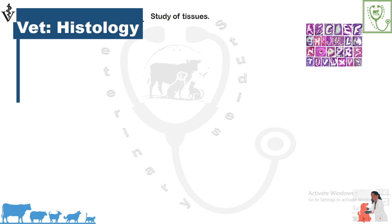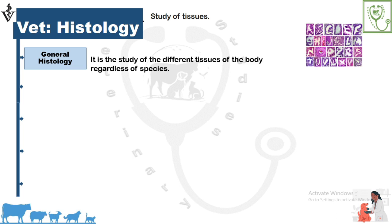Veterinary histology is the scientific study of the microscopic tissues of an animal body. Veterinary histology includes general histology, in which we study about the different tissues of an animal body regardless of species. Although there are many species in animal sciences with the same systems and organs, in general histology we do not compare anything between species. We study the normal microscopic structures of different organs of the animal body to know about their normal histology.